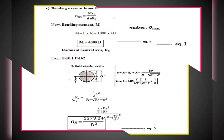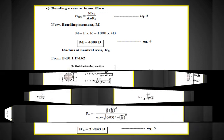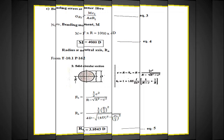Now we find the bending stress at the inner fiber: sigma_B(Ri) = M × Ci / (A × e × Ri). Bending moment M = F × R (perpendicular distance is the radius at centroidal axis). So M = 1000 × 4D = 4000D — this is equation 4.